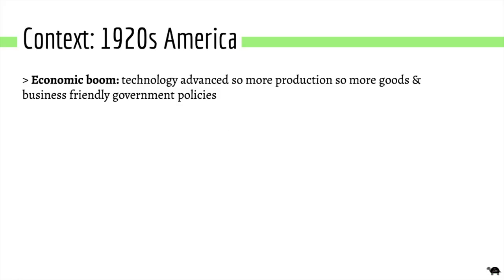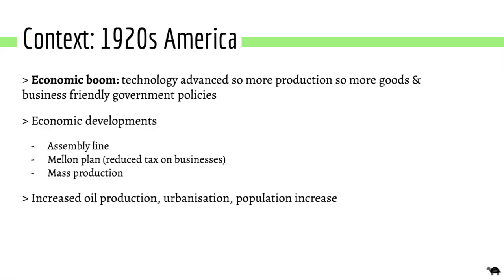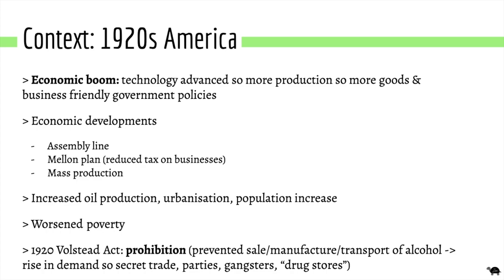I'm going to start out with a fair amount of context. The exam I was on specified the importance of applying context for a historicist approach to text. For Gatsby, the 1920s era marked a place of huge economic boom and wealth inequality. Particularly, the Volstead Act enacted something called prohibition, which made alcohol illegal, creating a higher demand that resulted in a rise of illegal trade, gangs and underground parties, allowing some people to get rich incredibly fast by breaking the law.